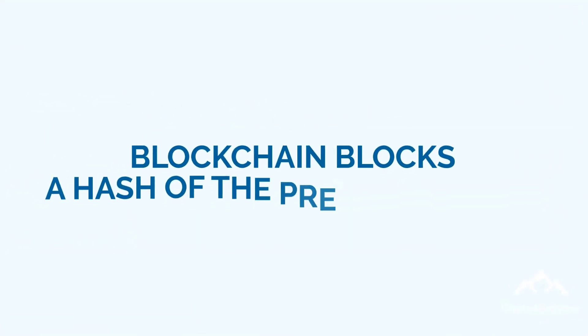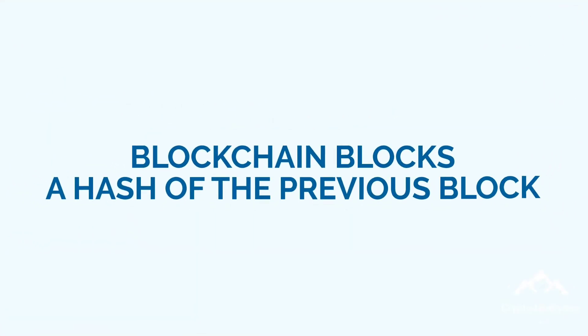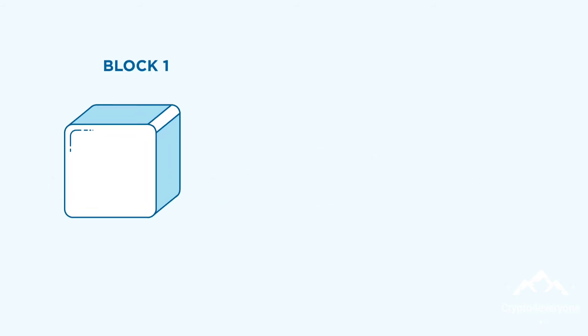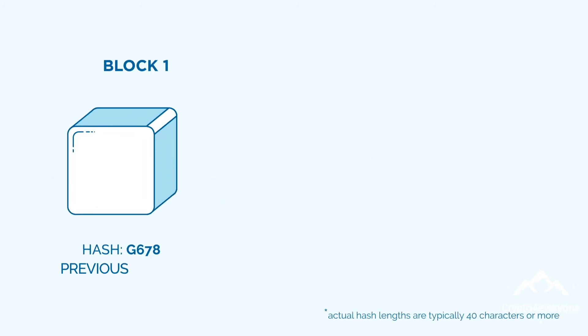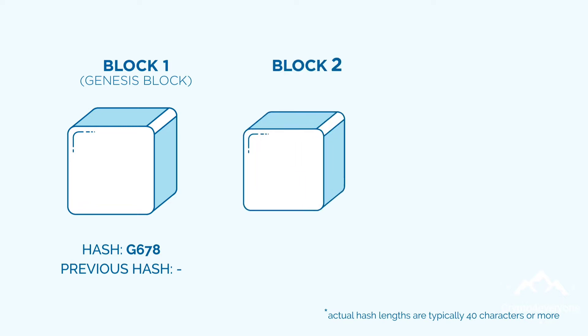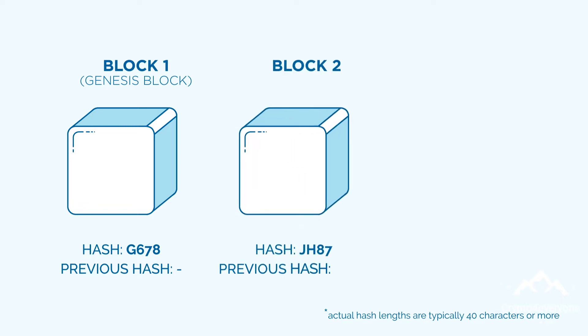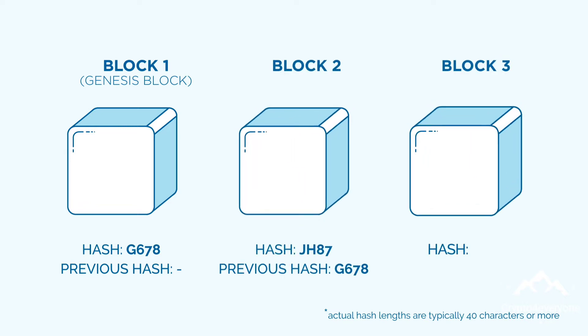Blockchain blocks: a hash of the previous block. Excluding the first block within a blockchain, also referred to as the Genesis block, all subsequent blocks contain a hash of the previous block.